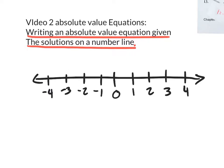Let me first draw a number line. What if my answers were negative three and positive three? What kind of absolute value equation would give me those answers? This would be the absolute value of x equals three, because when you do the positive situation and the negative situation, you're going to get positive and negative three.